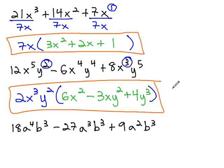Let's do this again with one more example. In this last example, we have 18a⁴b³ - 27a³b³ + 9a²b³.